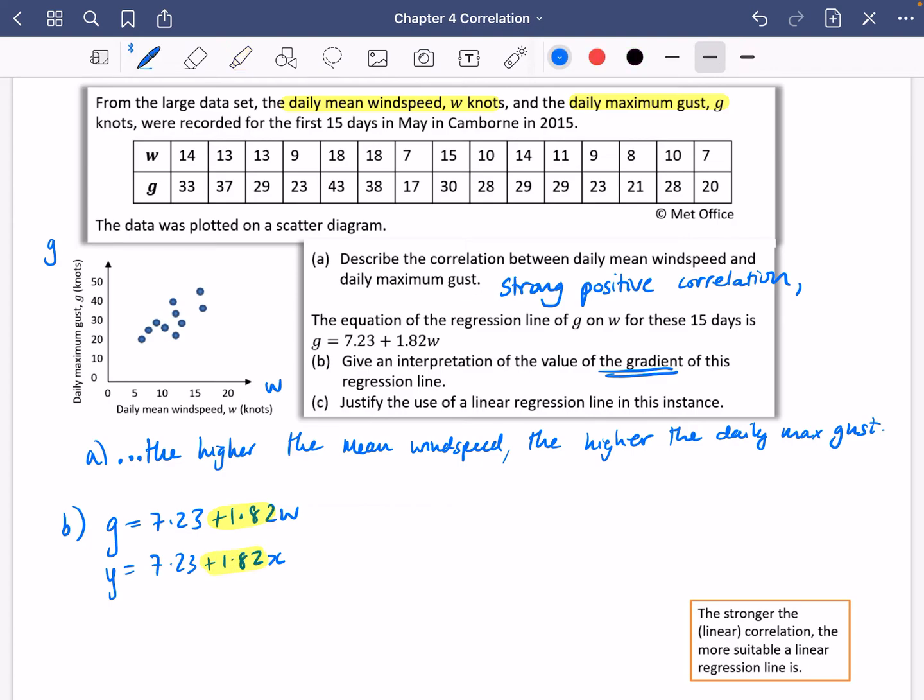This means that for an increase in one knot in mean wind speed, the maximum gust increases by 1.82 knots.